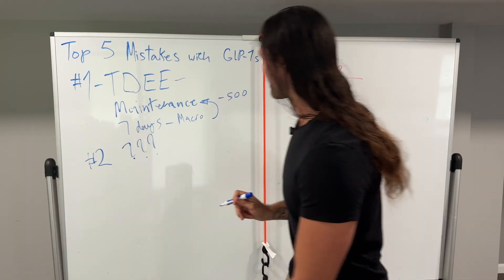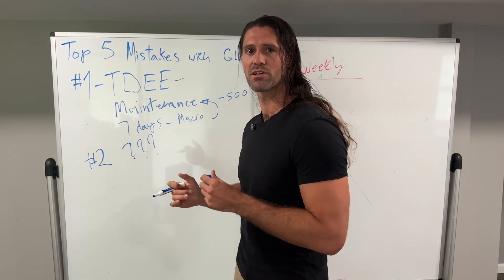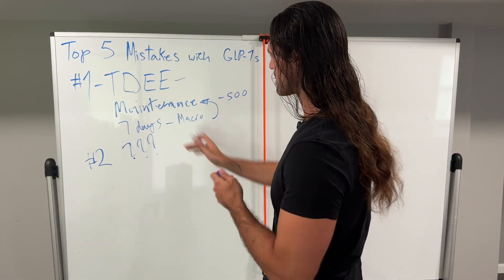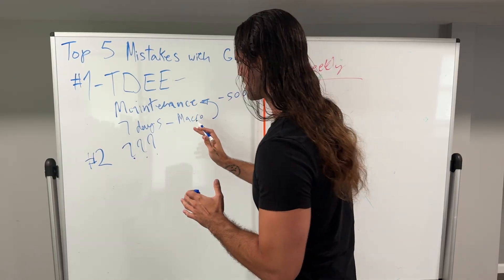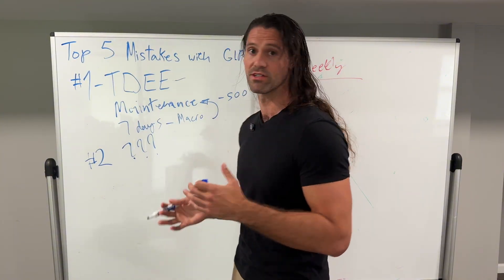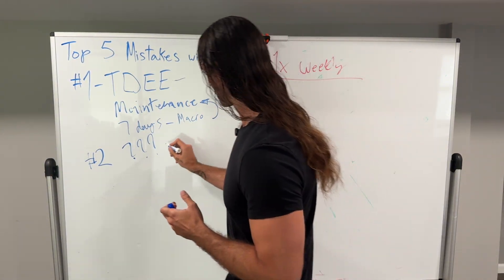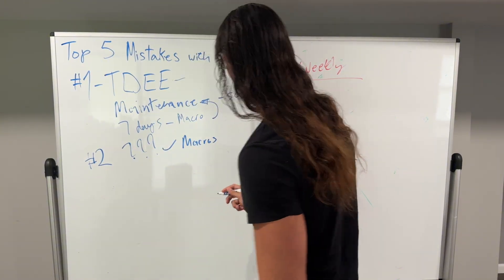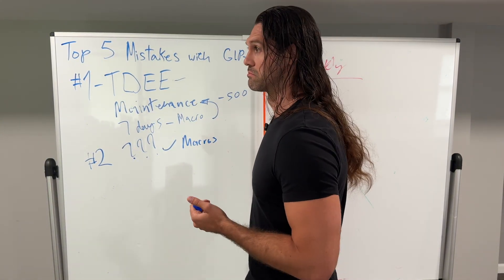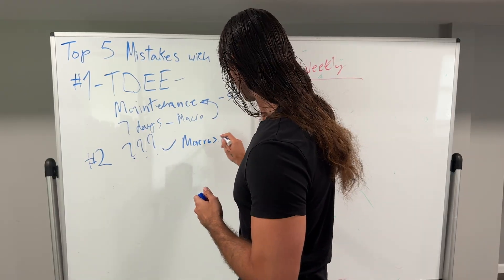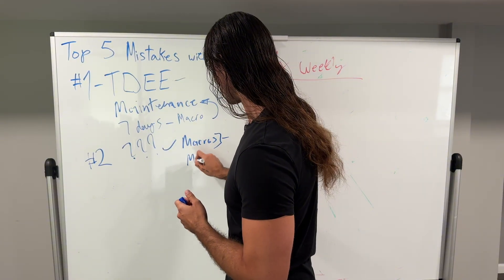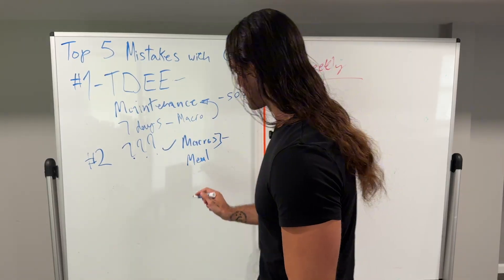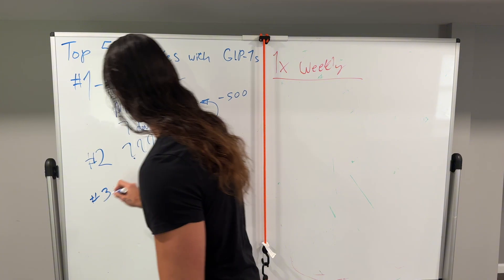That takes us to mistake number two: you have no idea that you can calculate your metabolism in the first place. I've talked to so many people — when I ask if they figured out their metabolism when they started, they don't even know this math exists. This isn't black-box science; we know how to calculate human metabolism. People also don't know about macros — carbohydrates, protein, fat, what foods are good to eat — no clue how any of this factors into an actual eating system.